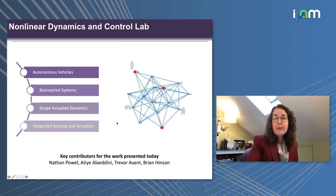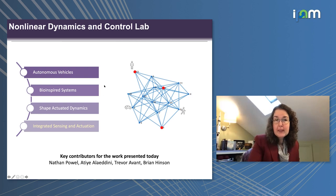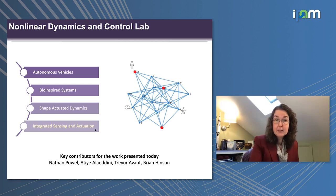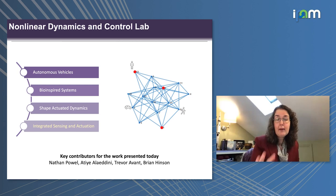My lab at the University of Washington is the Nonlinear Dynamics and Control Lab. Broadly speaking, we address autonomous vehicles — underwater, ground, air, and some space applications — as well as bio-inspired systems. I do collaborative work with people in biology and computer science working with biological and bio-inspired systems. We also do a lot of shape-actuated dynamics, but today I'll focus more on this integration of sensing and actuation, since there are many benefits from looking at the coupling between how things move and how they sense.